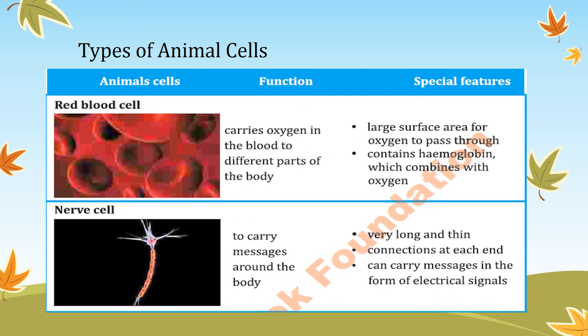Now the types of animal cells. The first type is red blood cells. They have a large surface area so they can bind to more oxygen. They contain hemoglobin, which combines with oxygen to carry out respiration. Their function is to carry oxygen in the blood and deliver it to different parts of the body.